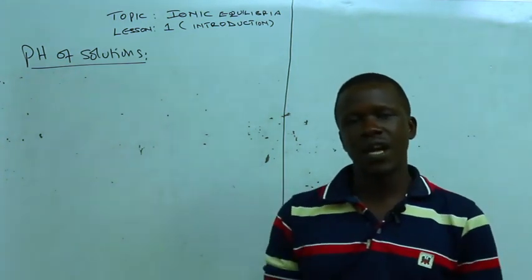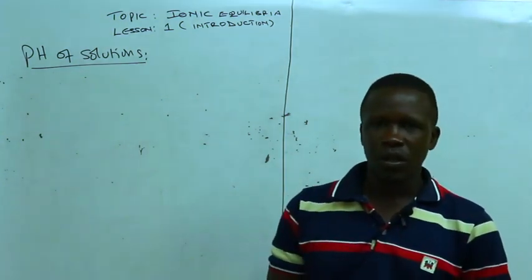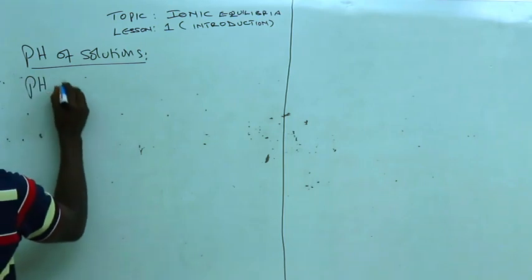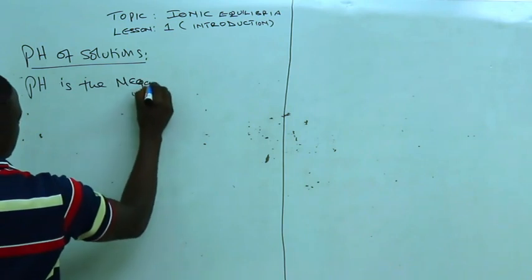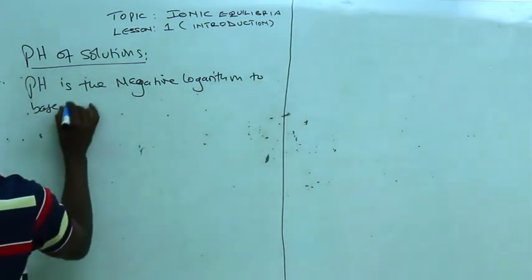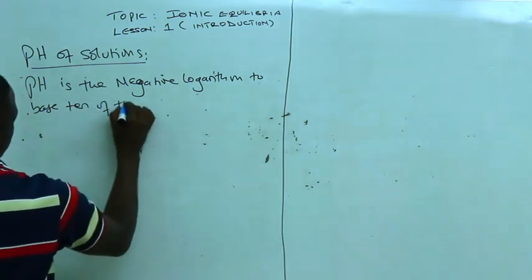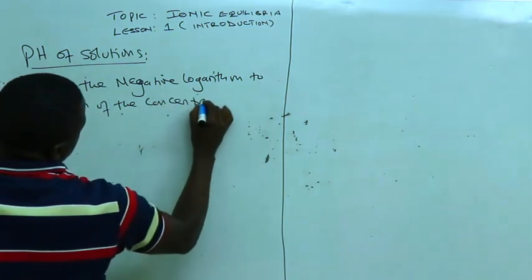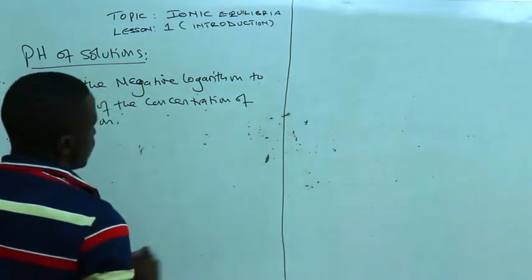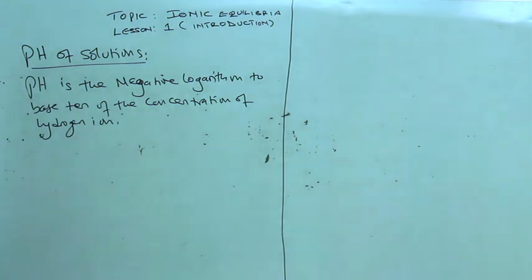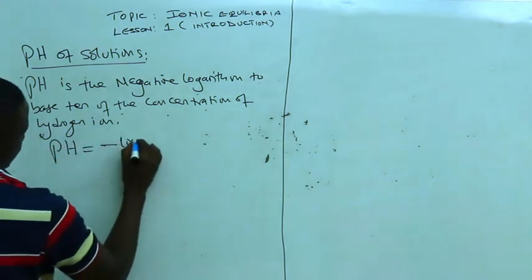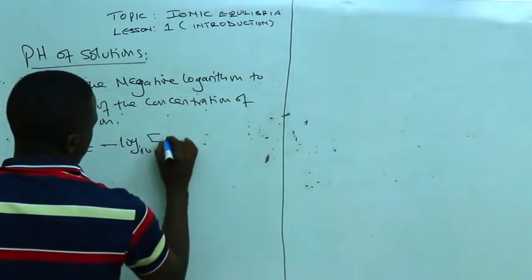However, in chemistry, particularly at advanced level, we are going to look at pH as the potential of hydrogen ions. We measure the pH of a solution depending on the concentration of hydrogen ions present. In our mathematical definition, pH is the negative logarithm to base 10 of the concentration of hydrogen ions. This can be written as: pH = −log₁₀[H⁺].